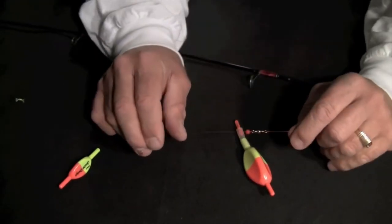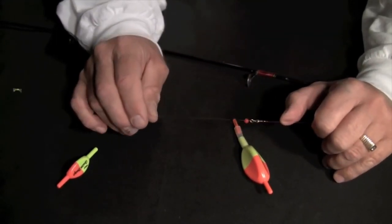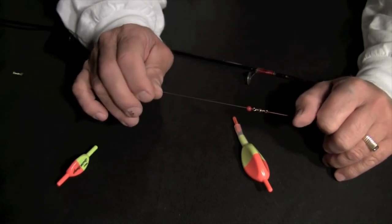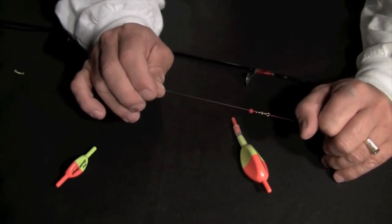Remember here at Wing-It fishing products, less time rigging means more time fishing. And another thing, Wing-It quick swap products are all made in the good old USA.